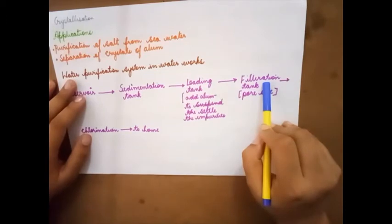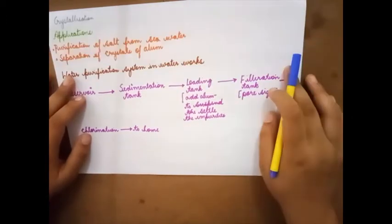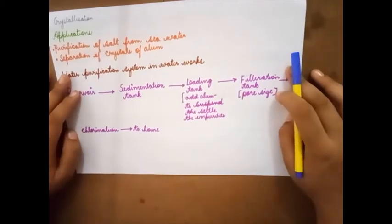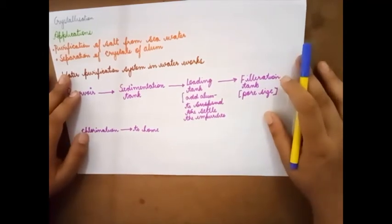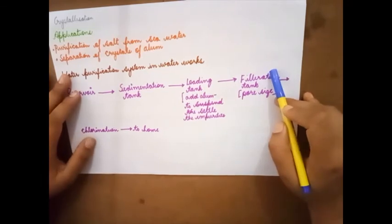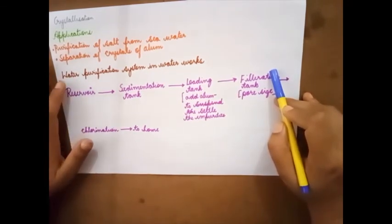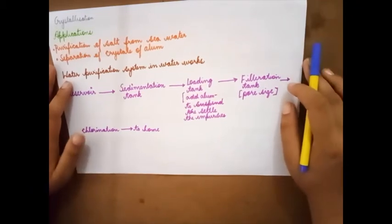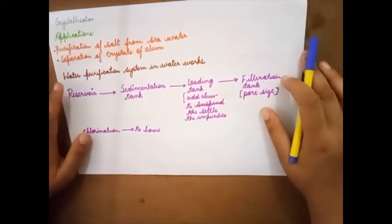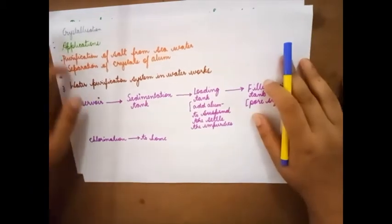Then it is taken to filtration tank. Depending upon the pore size, the particles are getting separated or they are getting filtered. Then finally you add chlorine and once chlorination process is done it is supplied to home. This is the purification system in water works.